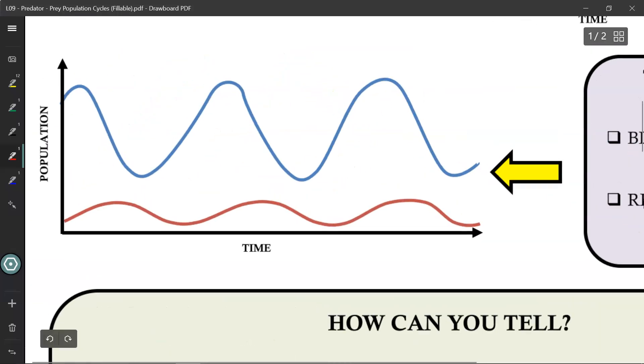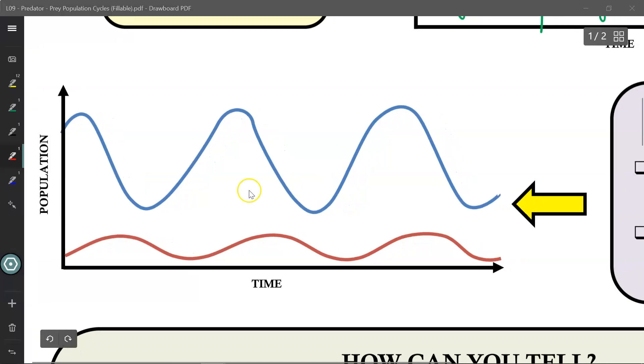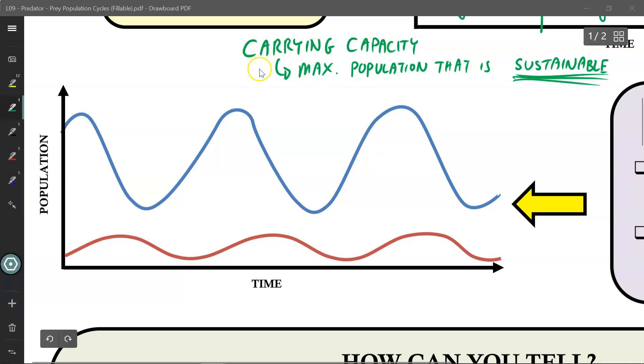Looking at the predator-prey population curve, we can get some additional information about this ecosystem, such as the carrying capacity. If you recall, carrying capacity is defined as the maximum population that is sustainable by the environment. Sustainable means how much the environment can support without ever dying out permanently. Sure, there'll be some increases and decreases in the population over time, but overall, this population is stable and will be sustained ongoing as long as the conditions don't change.